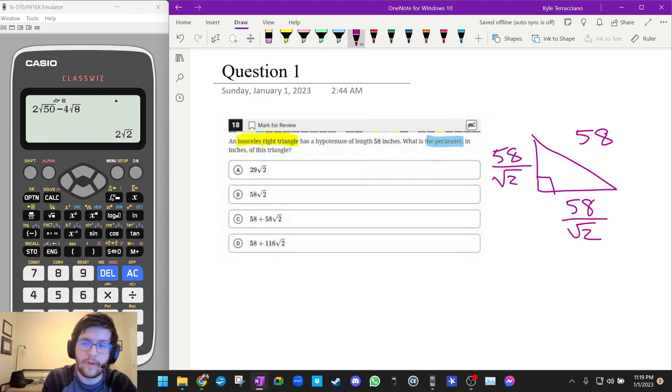So what we're going to do is 58 plus 58 over square root 2 plus 58 over square root 2. And simplifying that is actually a good bit of work. It would probably take you another at least 20 or 30 seconds to do by hand, and of course there's a chance you might make a mistake.